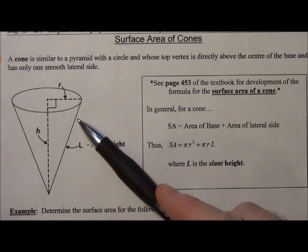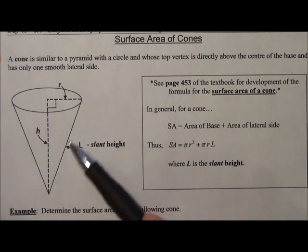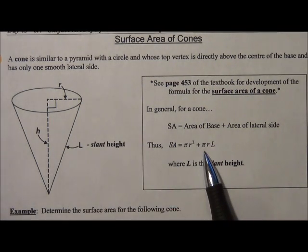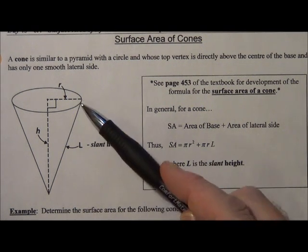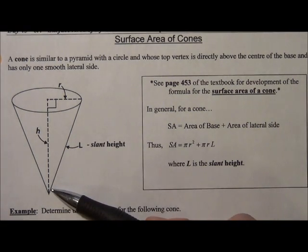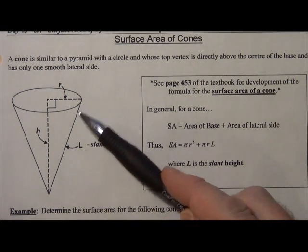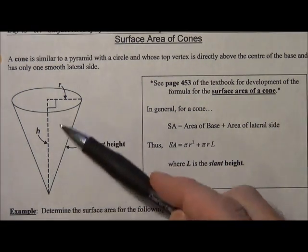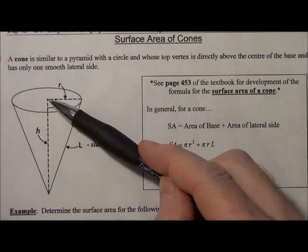And the lateral side is this curved side here, which is determined by pi times r times l, where l is the slant height, which again can be found by using Pythagorean theorem, because we see inside a cone, again, it is another right triangle.